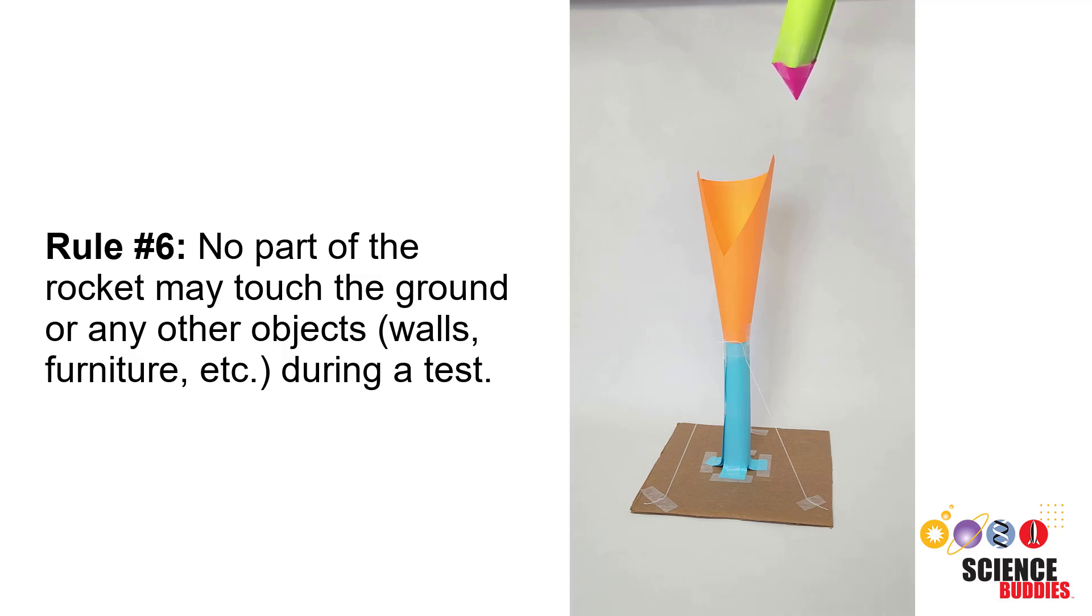Rule six: No part of the rocket may touch the ground or any other objects such as walls or furniture during a test.